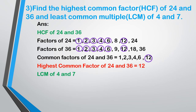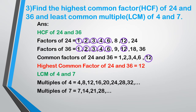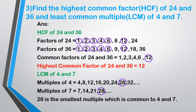The next sum: find the least common multiple of 4 and 7. We write the multiples of 4: 4, 8, 12, 16, 20, 24. Then the multiples of 7: 7, 14, 21, 28. We choose the smallest common multiple. The LCM of 4 and 7 is equal to 28.